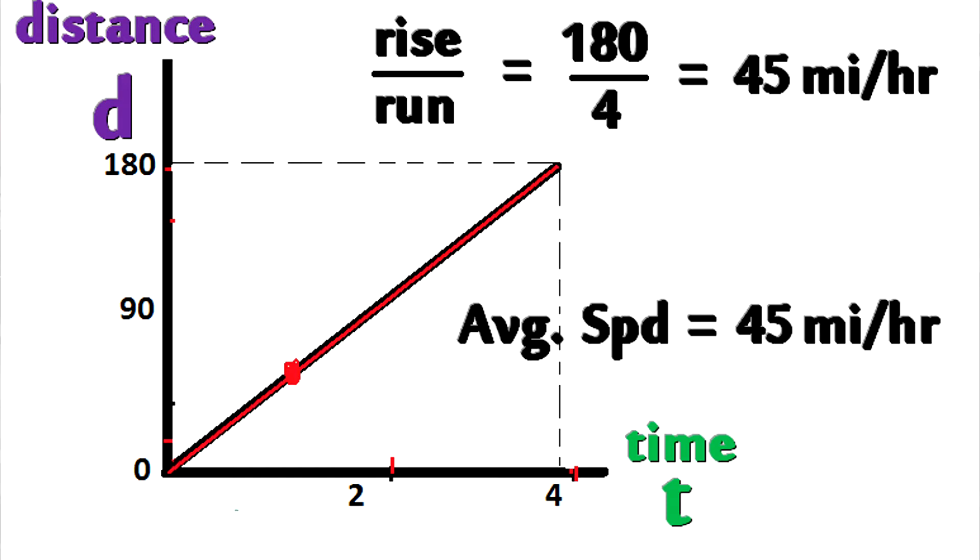If you take a tangent to any point on that line, it would just be the line itself. So because you were always travelling 45 miles per hour, your instantaneous speed was always 45 miles per hour.